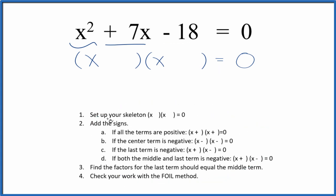The first thing we need to do is set up a skeleton equation. This is our skeleton equation right here. Then we can add the signs to the skeleton equation. Since I have a positive and a negative, if the last term is negative, we'll put a positive and a negative here in our skeleton equation.